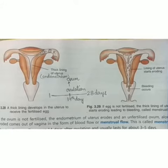The menstrual cycle is controlled by the changes in the level of female sex hormones called estrogen and progesterone.